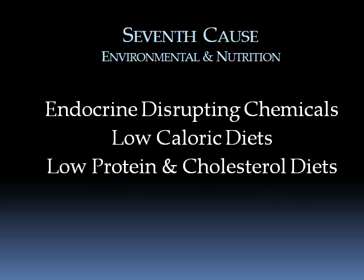The seventh cause of low thyroid hormone symptoms involves endocrine-disrupting chemicals in our environment. A study out of Paris showed these are primarily found in pesticides in our foods and in cosmetics. These disrupt normal endocrine function, including thyroid function, and cause problems with physical and mental development, especially in children.